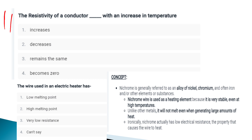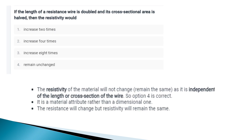The resistance of a conductor increases with an increase in temperature. Regarding the wire used in an electric heater: it has a high melting point. It is made of nichrome — an alloy of nickel and chromium — used in heating elements because of its high melting point.